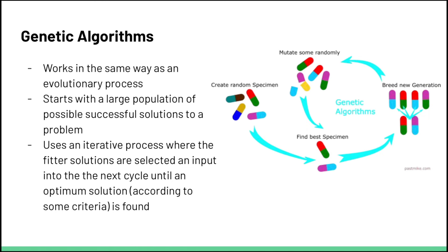The way to look at genetic algorithms is to see it through the lens of survival of the fittest. Basically, we're going to use the same methodology as evolution to end up with an optimal solution at the end of using a genetic algorithm.